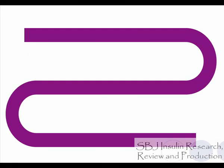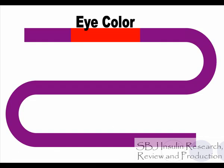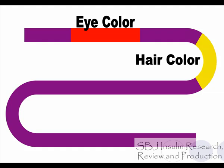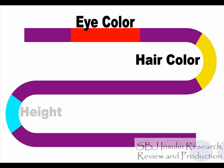Here is the gene for eye color. Your DNA also determines your hair color. And here is the gene for hair color in your DNA. One other thing your DNA determines is your height. And here is the height gene.